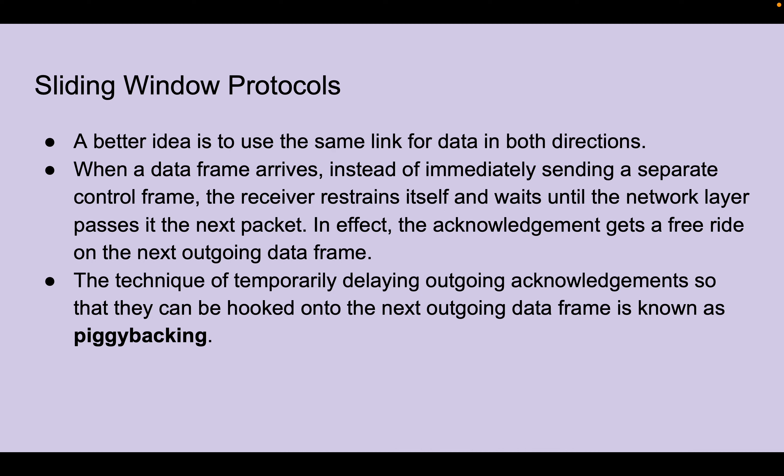A better idea is to use the same link for data in both directions. Sliding window protocols work as follows: when a data frame arrives, instead of immediately sending a separate control frame, the receiver restrains itself and waits until the network layer passes it the next packet. In effect, the acknowledgment gets a free ride onto the next outgoing data frame. The technique of temporarily delaying outgoing acknowledgments so that they can be hooked onto the next outgoing data frame is known as piggybacking.